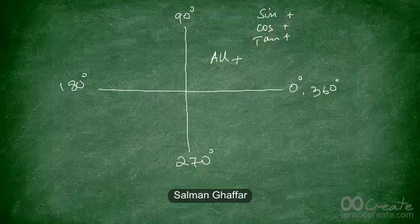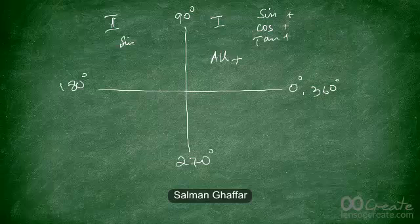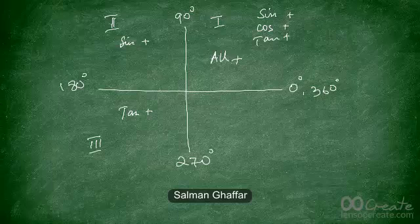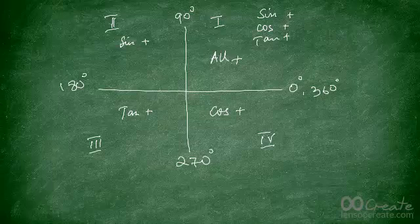In the second quadrant, between 90 and 180 degrees, only sine is positive while cosine and tan are negative. In the third quadrant, between 180 and 270 degrees, only tan is positive and sine and cosine are negative. In the fourth quadrant, between 270 and 360 degrees, only cosine is positive and all others are negative.